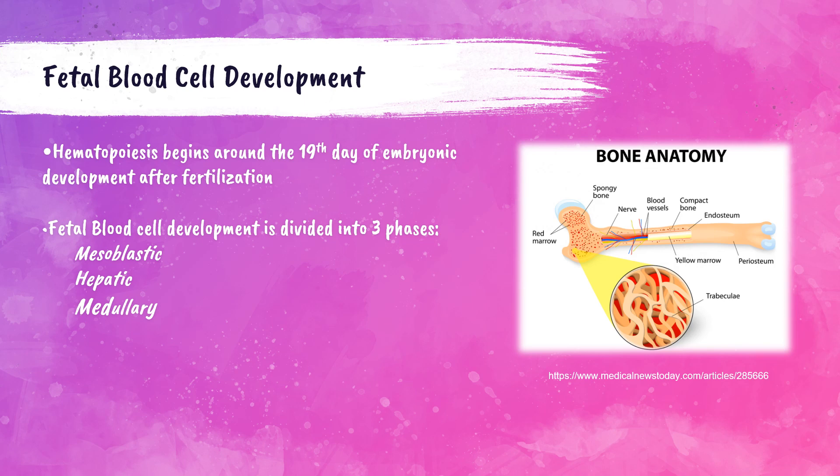It starts in the yolk sac, which is the mesoblastic phase, then transitions to the liver, which is the hepatic phase. It transitions to the liver only temporarily before finally establishing definitive hematopoiesis in the bone marrow and thymus, which is the medullary phase.